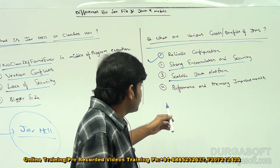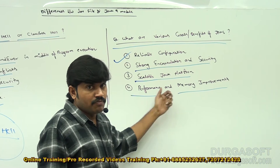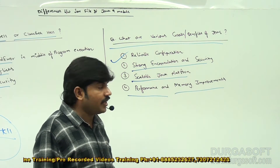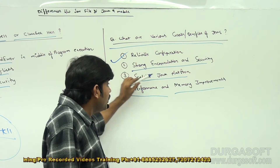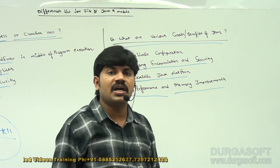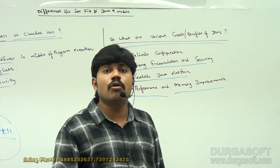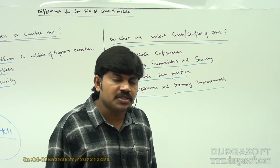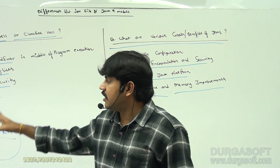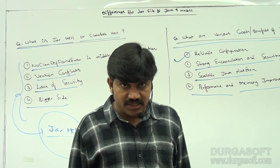The fourth goal is performance and memory improvements. Memory improvements are very good, and automatically performance improvements will also be there because of the module system. So with reliable configuration, strong encapsulation and security, scalable Java platform, and performance and memory improvements, Java 9 onwards we can happily use Java for IoT applications, microservices, and portable devices — running multiple Java applications within small memory.